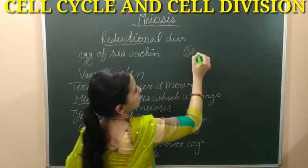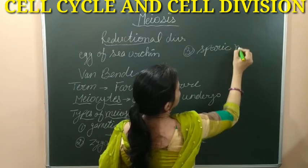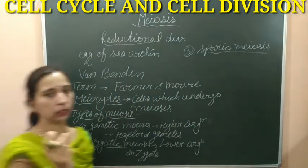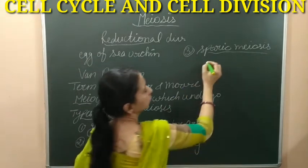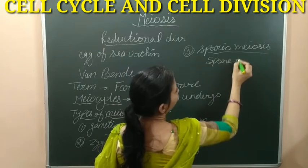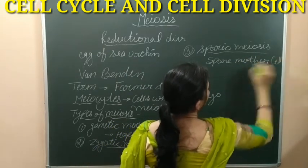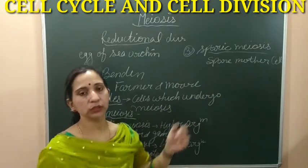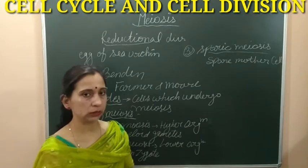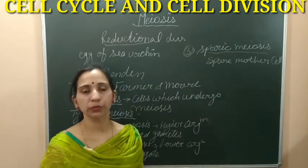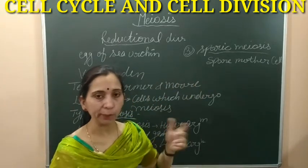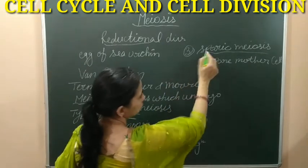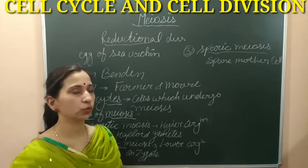The third type of meiosis is sporic meiosis. This type of meiosis happens in, for example, pteridophytes, where spores are formed. The spore mother cells go through meiosis and form haploid spores. In plants, spore mother cells can be megaspore mother cells and microspore mother cells — both types of spore mother cells undergo meiosis and form haploid spores. After that, they can form a new organism. This is the type of meiosis which happens in spore mother cells for spore formation, and that's why it is known as sporic meiosis.